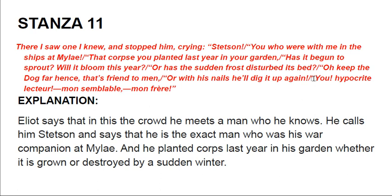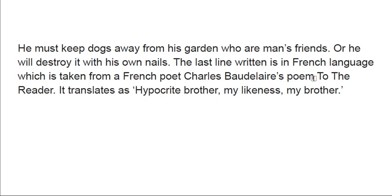In the explanation, Eliot says that in the crowd, he meets a man he knows and calls him Stetson — his war companion from Mylae. He asks whether the crops Stetson planted last year in his garden have grown or been destroyed by sudden winter. He must keep the dog away from the garden, or it will destroy things with its nails. The last line is written in French, taken from the French poet Charles Baudelaire's poem 'To the Reader,' and translates as: 'Hypocrite reader, my likeness, my brother.'